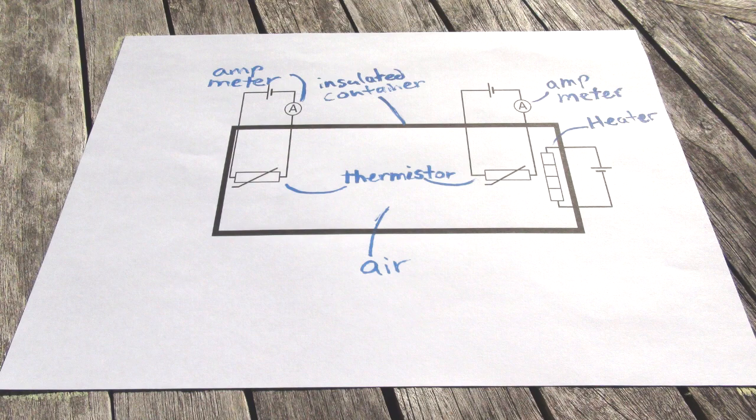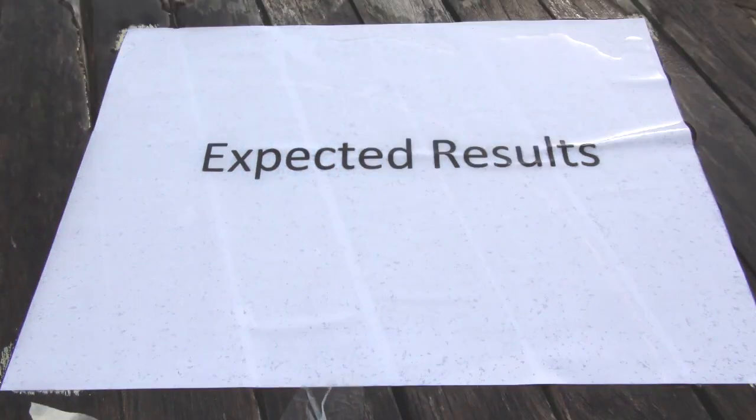This experiment will be carried out both on Earth and on the ISS to compare the results. If the rate of heat transfer is faster on Earth, then the time taken for the ammeter readings to be the same will be shorter on Earth than on the ISS.